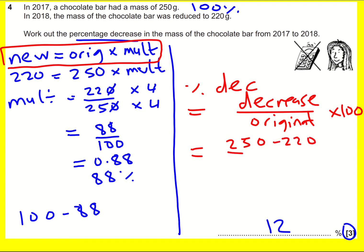So the decrease is 250 minus 220, the original was 250, and then I times by 100. That's 30 divided by 250 times 100. I can times top and bottom by 4 to get 12 over 100 times 100, and these cancel out, leaving 12%.